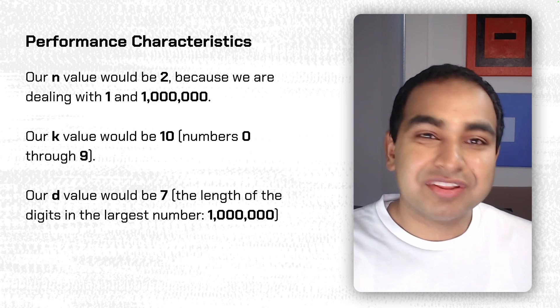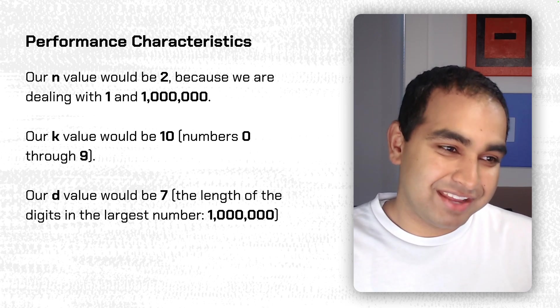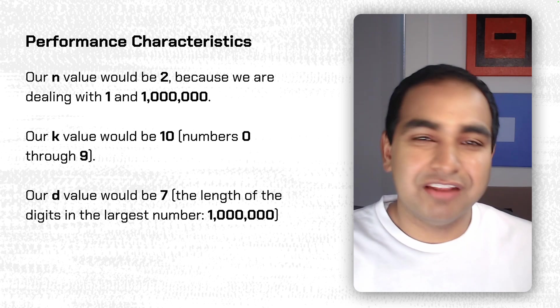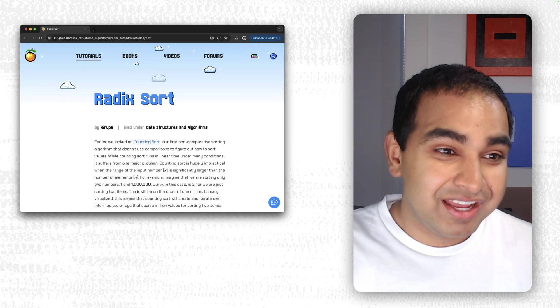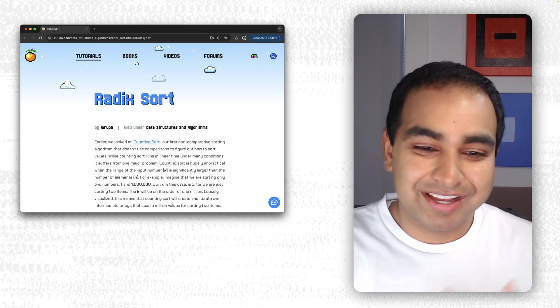We're just going to be dealing with, at most, a largest value here, which would be 10 from base numbers 0 to 9. Second would be the 7. And of course, the N value of 2. And that makes Radix Sort quite a nice algorithm.